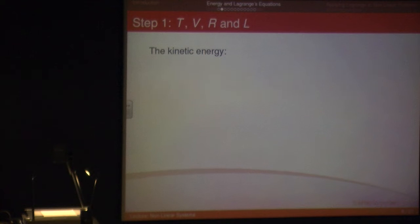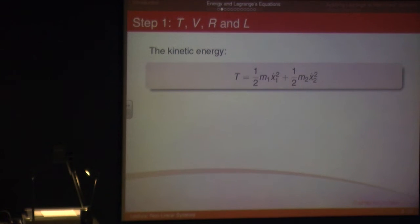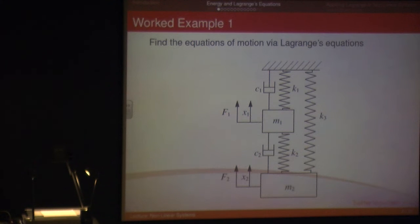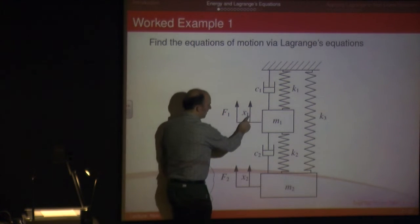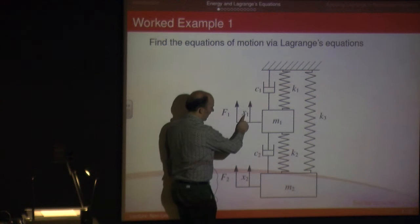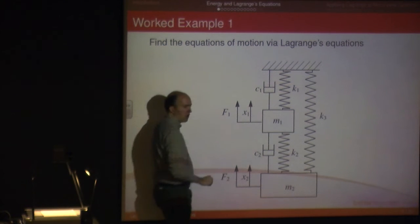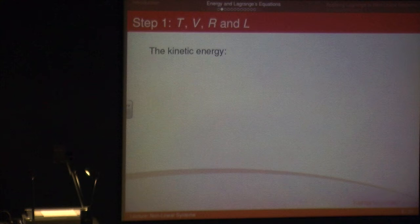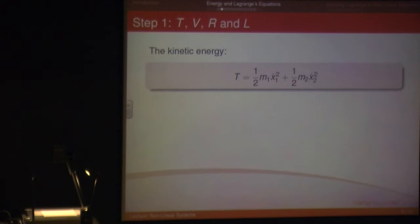For the kinetic energy, we've got two masses, so we have one-half mv-squared for both masses. For the first mass, M1, that moves in the motion X1, so one-half M1 X1-dot squared is going to be my kinetic energy for mass 1, and the same for mass 2. That's relatively straightforward — nice and easy.